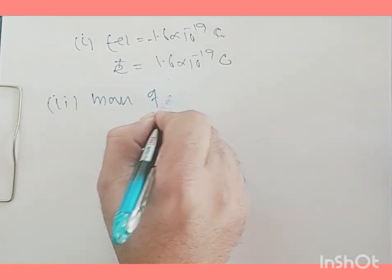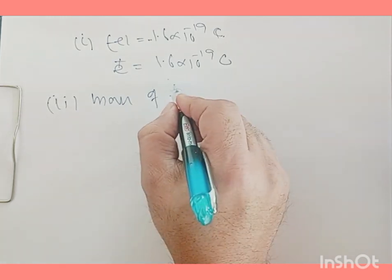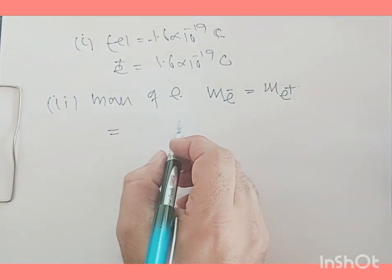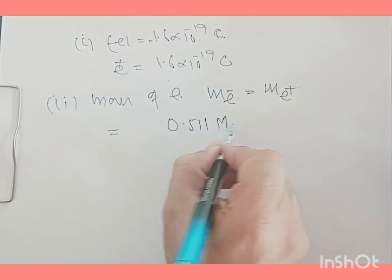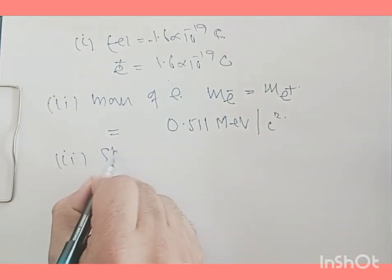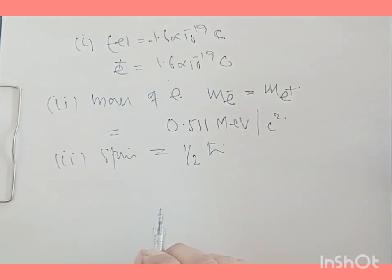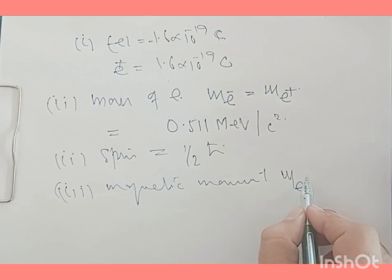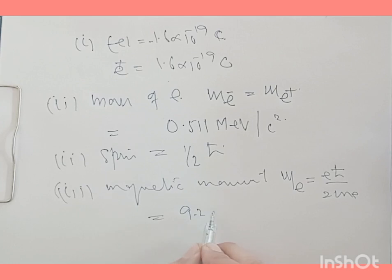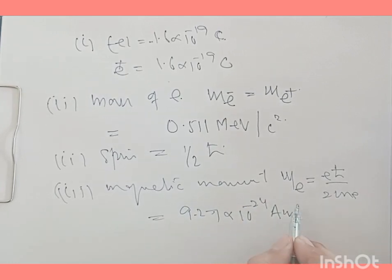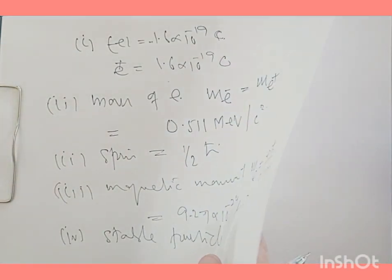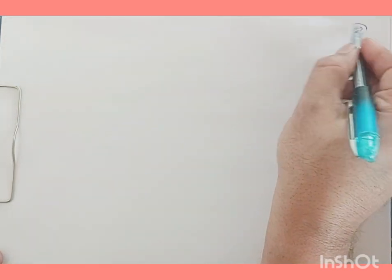The mass of the electron and its anti-particle are the same: m(e⁻) = m(e⁺) = 0.511 MeV/c². The electron has a spin of 1/2 ħ. Its magnetic moment μ_e = eħ/(2m_e) = 9.27 × 10⁻²⁴ A·m². The electron is a stable particle — it never decays. The electron participates in electromagnetic as well as electroweak interactions.